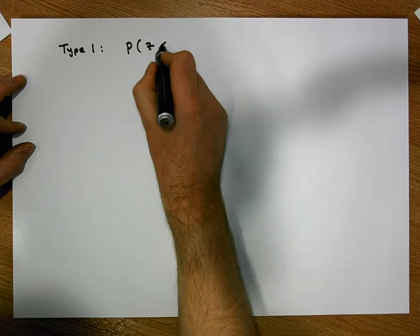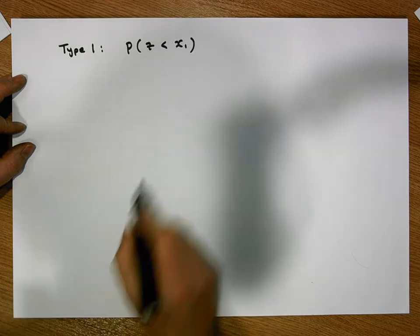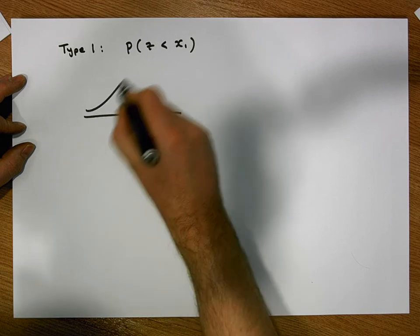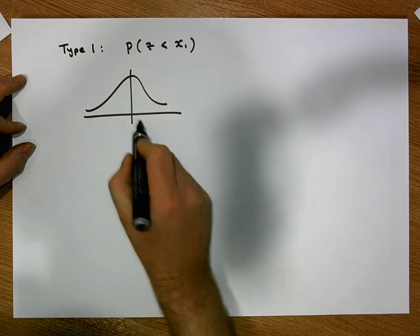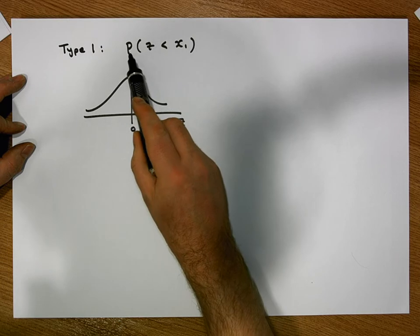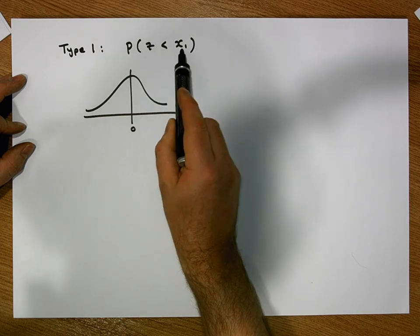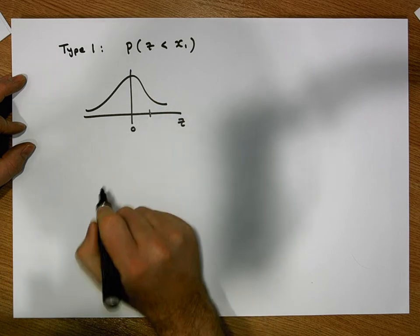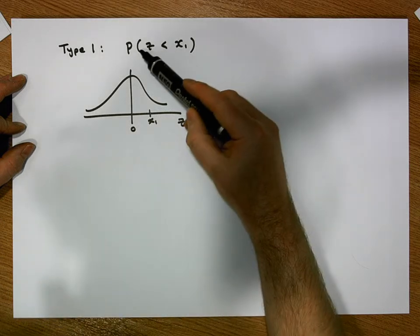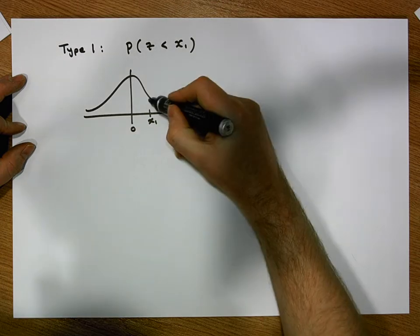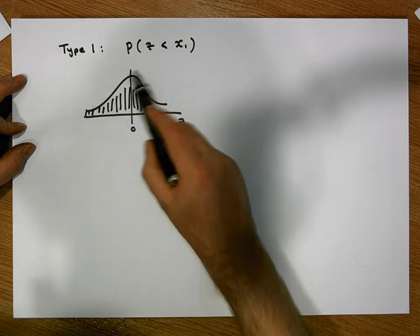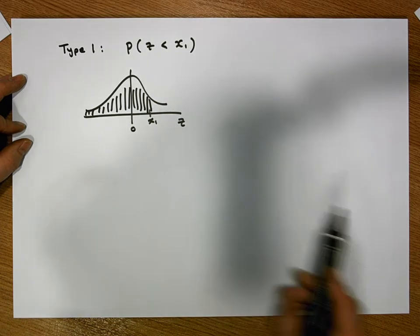The probability of observing a Z score less than a particular positive value. If we draw this probability with respect to a standard normal distribution, the curve looks something like this. We have the standard normal curve centred on 0, the horizontal axis represents the Z variable, and we're interested in probabilities of observing Z scores less than a particular positive value.